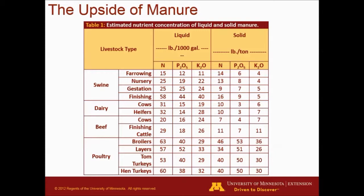Facilities and storage types are also going to affect variability. So the bottom line here is: use a manure test. Make sure that your client provides you with a manure analysis in order to estimate your manure application rates. The numbers in the table here are averages, so there's going to be quite a bit of variability depending on the facility that you're working with.